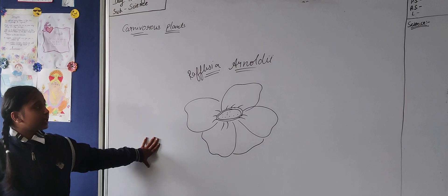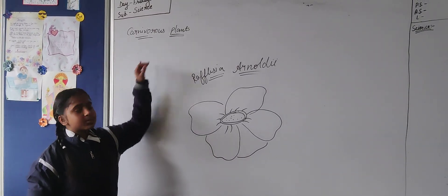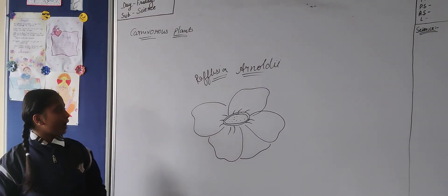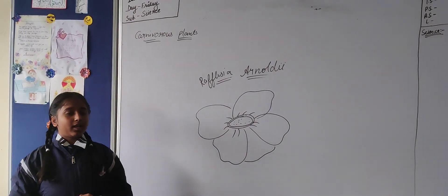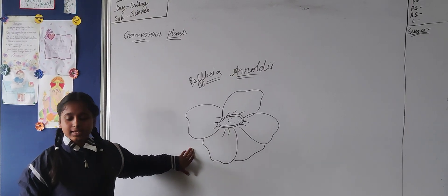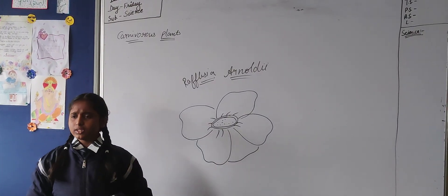Today I am going to master the concept on the topic of carnivorous plants. Do you listen about the plant Rafflesia arnoldi, the biggest parasitic plant in the world, which has a flower-like structure and maroon in color?